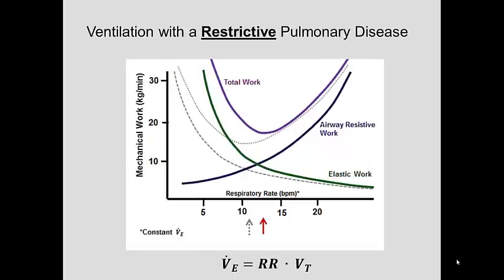If we look at ventilation with a restrictive pulmonary disease, restrictive pulmonary disease corresponds to a decrease in compliance of the lungs — it means it's harder, it takes more pressure and more work to expand the airways so that they may fill with air.